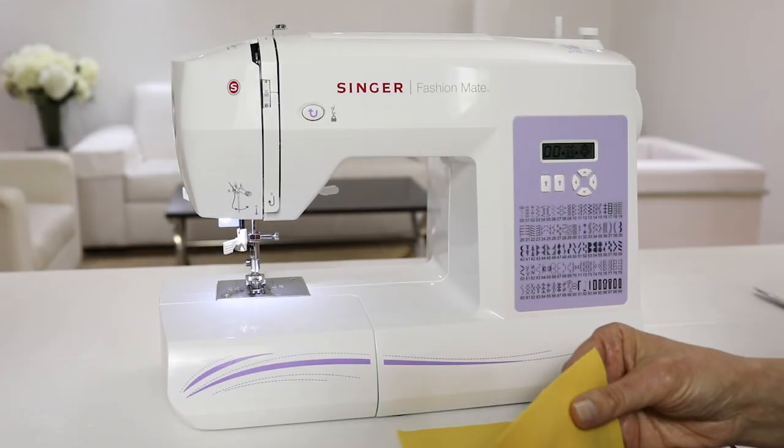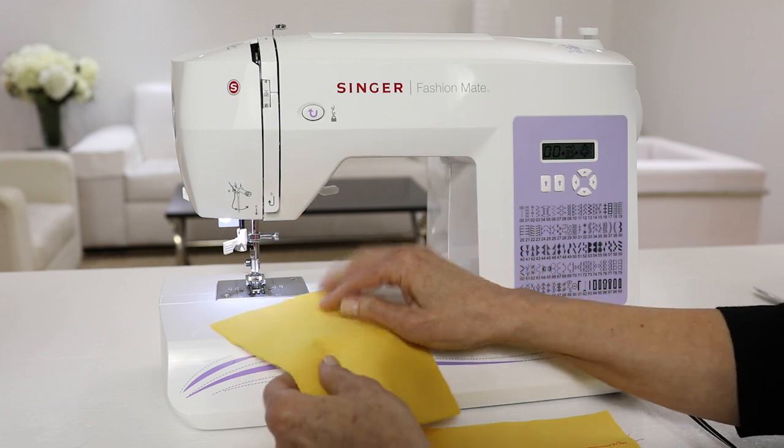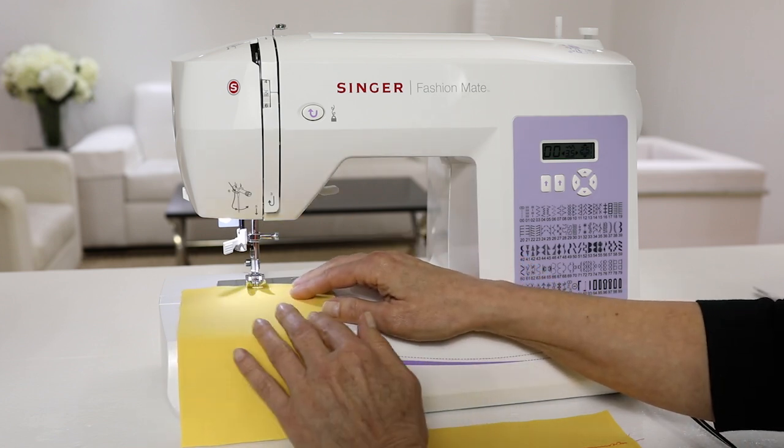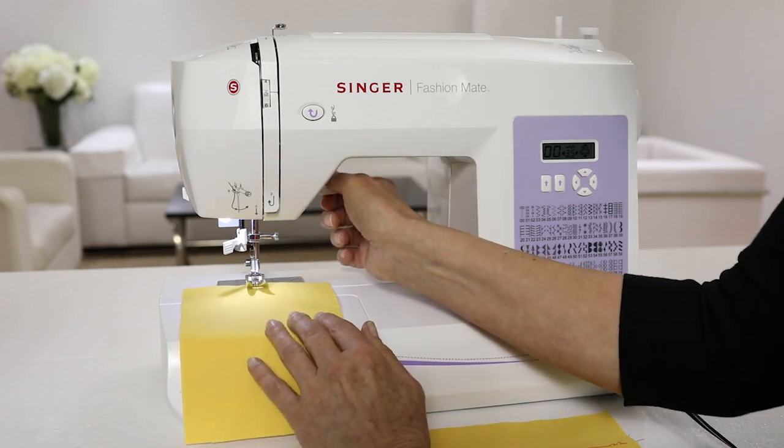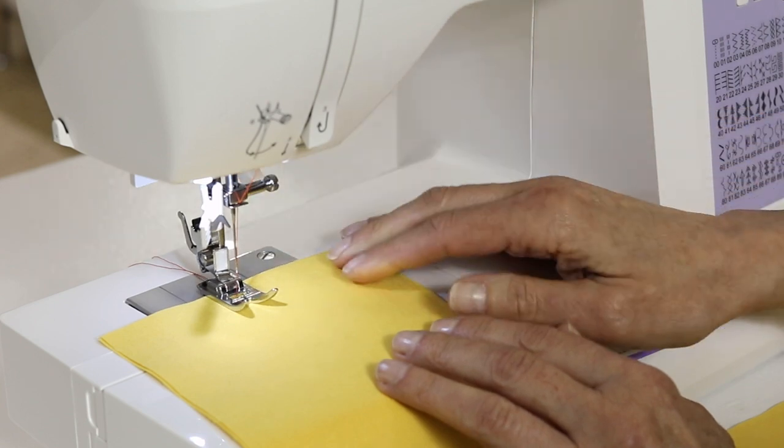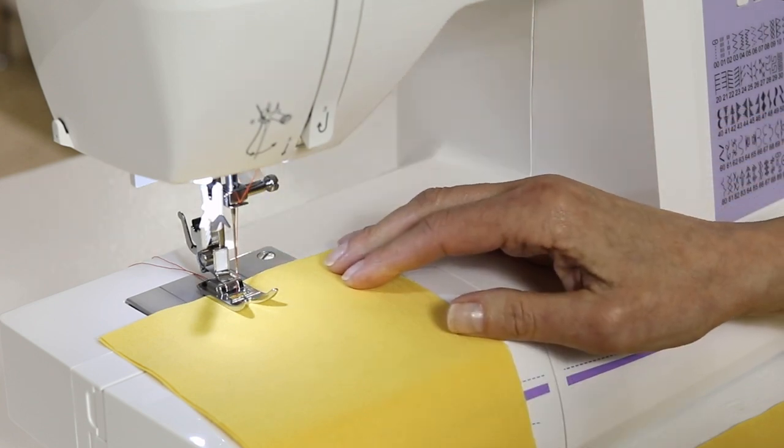Now that our machine is threaded, we're ready to test our stitch. When you first turn on the machine, it's already set for straight stitch. So place your fabric underneath the presser foot, lower the presser foot lifter and step on the foot control to begin sewing.